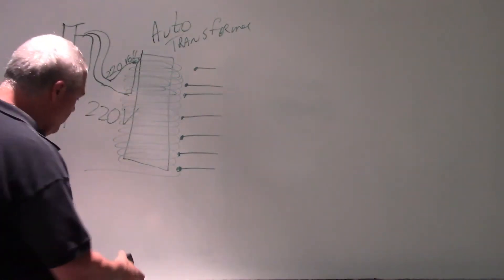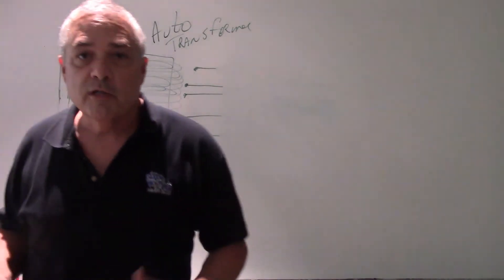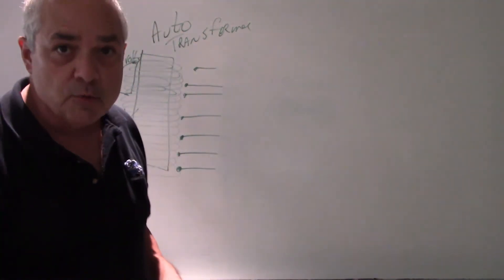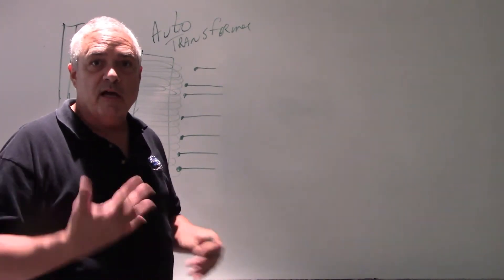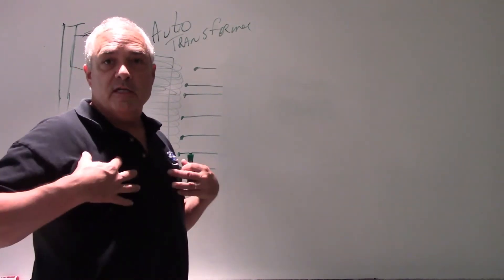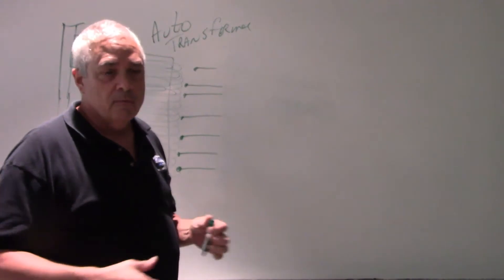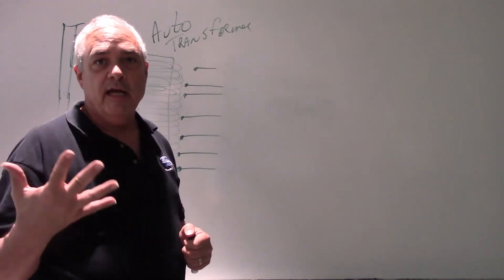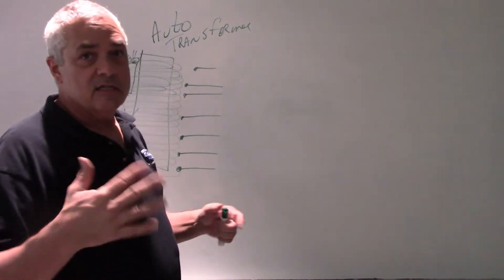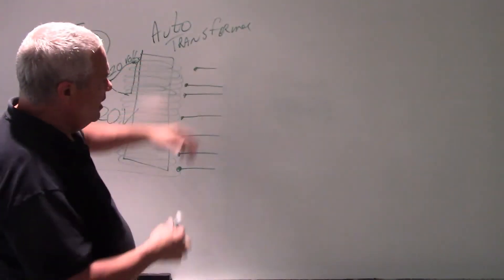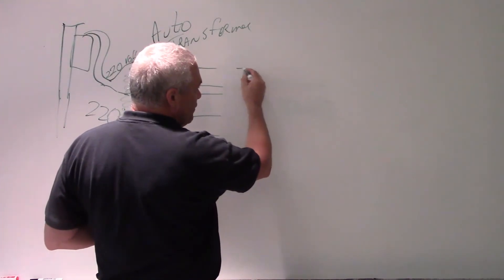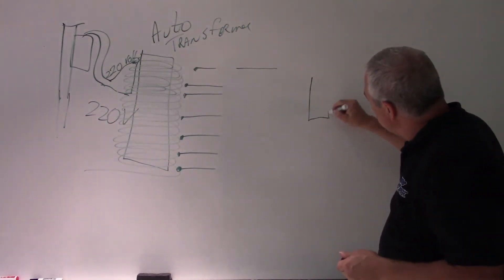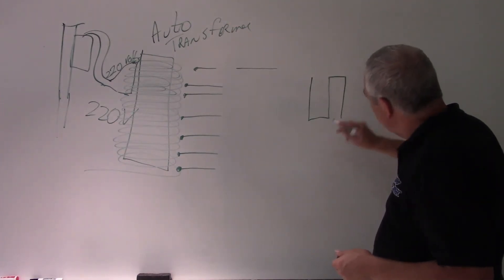Now we've got voltage coming off the auto transformer, but we need a lot of voltage — 80,000 volts, 100,000 volts, 120,000 volts — depending on what kind of X-rays we're doing. For an abdominal series we might need 90 kVp; for a chest X-ray probably 120,000 volts; for a hand, just 60 kVp. So we select the right voltage, and coming off the auto transformer, we feed into a device called a high voltage transformer.